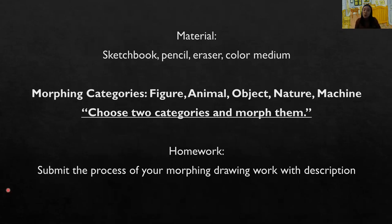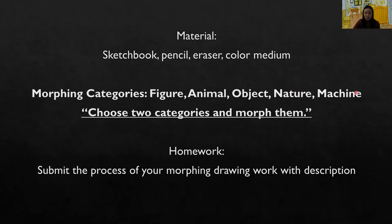You will need a sketchbook, pencil, eraser, and any color medium you have for this project. If you can use a digital program you may pursue digital drawing. There are five categories: figure, animal, object, nature, and machine. Please choose at least two categories and morph them. As usual, please post your work process with a short description by tonight, and by tomorrow please reply to your peers.